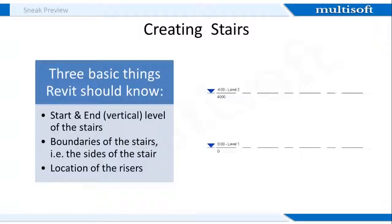The second thing is the boundaries of the stairs — that is the sides of the stairs on the left and right as you walk up and down. The third one is the location of the risers. In most cases, you will probably want the first riser to start at the base of the stair, the last riser to be at the top, and all other risers to be spaced equally in between. You can do this by spacing each riser differently, but more on that later.